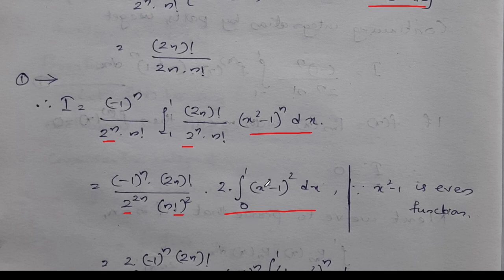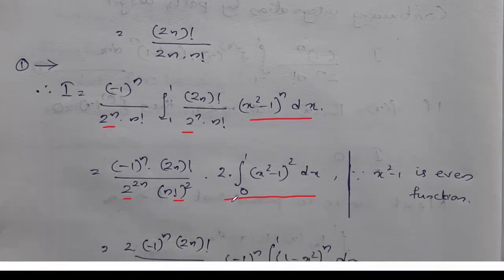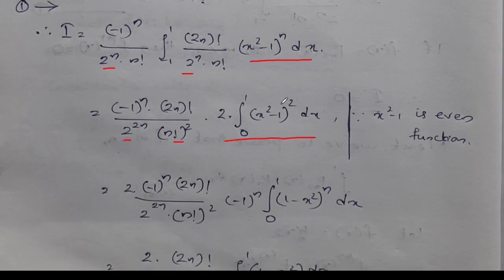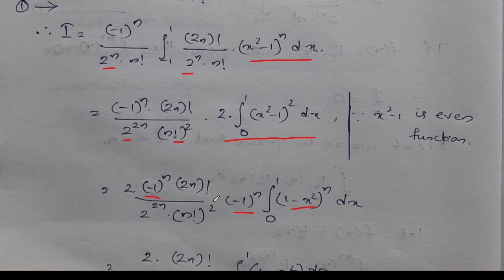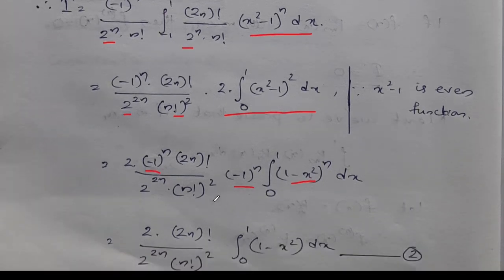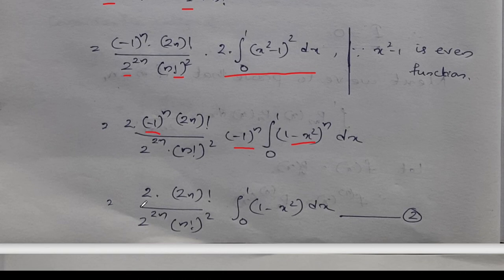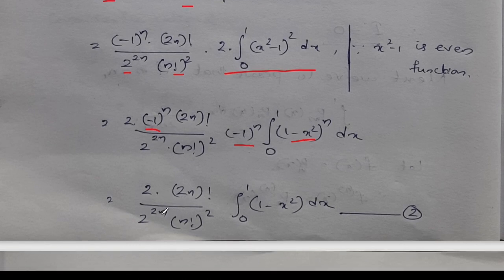So 2 into the integral from 0 to 1 of x squared minus 1 whole squared dx. Changing x squared minus 1 by minus 1 raised to n gives 1 minus x squared. So what we get is 2 into 2n factorial divided by 2 raised to 2n into n factorial, integral from 0 to 1 of 1 minus x squared whole raised to n dx.